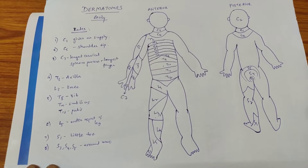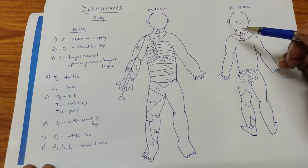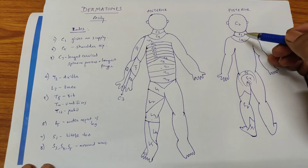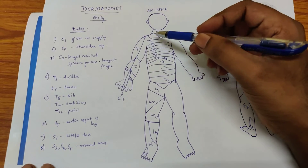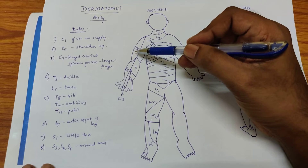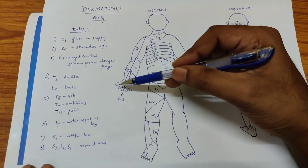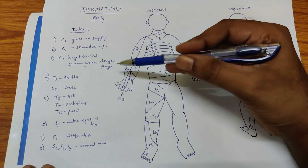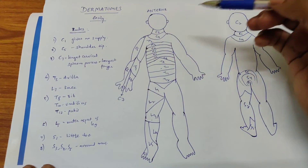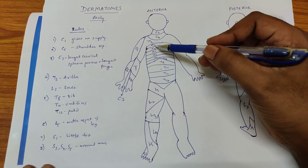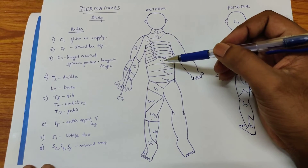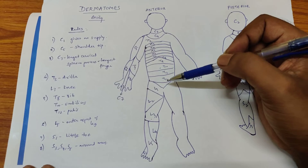To revise the mnemonic quickly: C1 doesn't give any supply, so it starts with C2 supplying the occiput. Then C3 and C4 supply the neck. C5 supplies the shoulder tip, coming from outer to inner aspect. C6 supplies the thumb and index finger. C7, the longest cervical spinous process, supplies the longest finger. Then C8, T1, T2. T3 supplies the axilla. Then T4, T5, T6, T7. T8 supplies the lower ribs, T10 the umbilicus, and T12 the pubis.